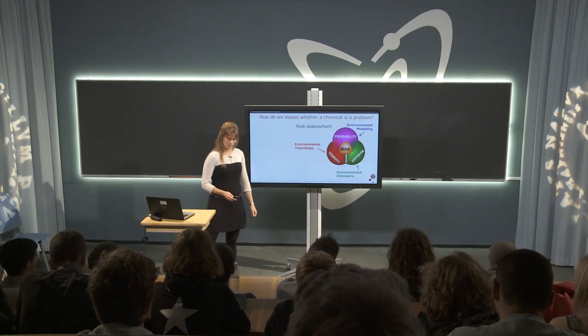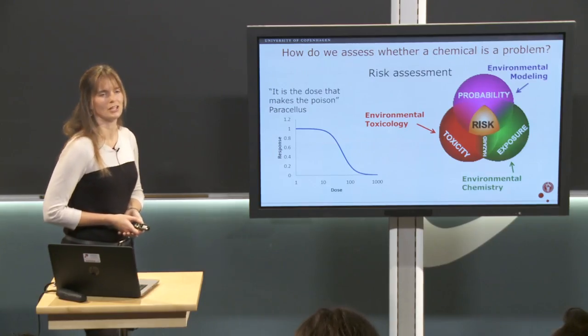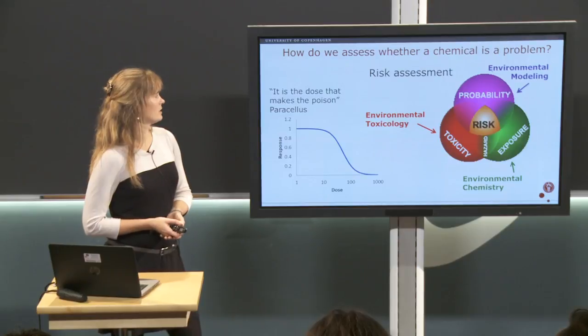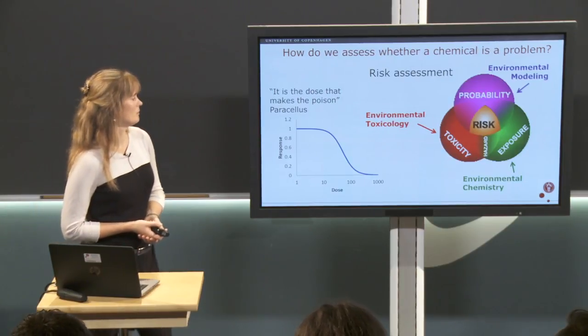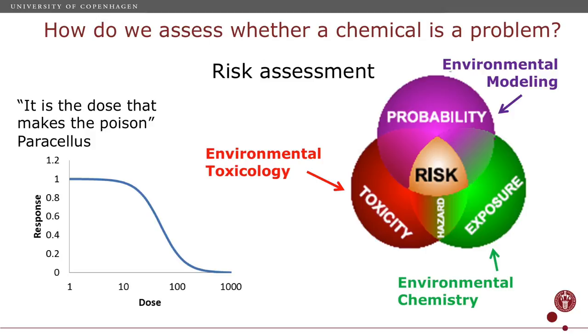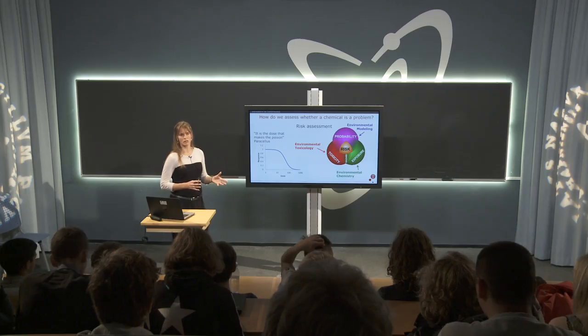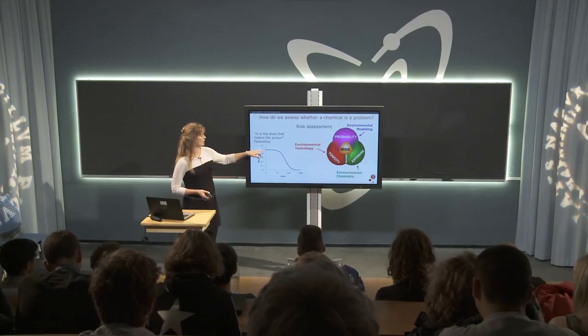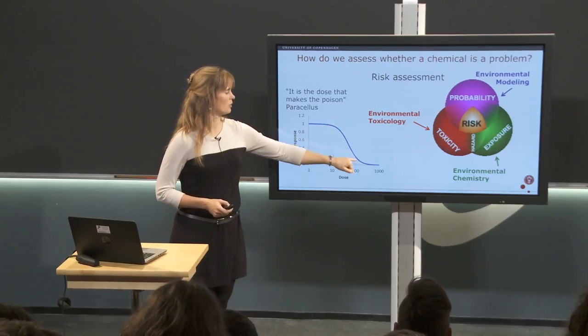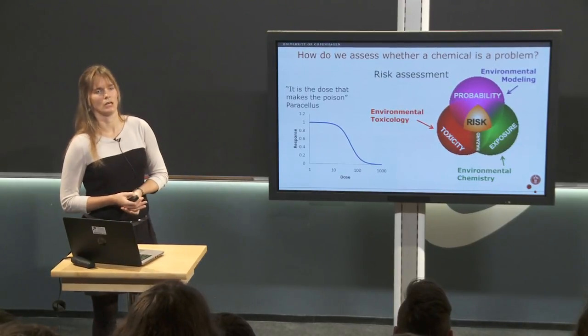The toxicity of a chemical we determine using dose-response curves. Paracelsus said that all is a poison and nothing is a poison — it's the dose alone that makes the poison. We take some organism, cell, or living thing and expose it to increasing doses of a toxicant, then look at a response such as survival, growth, or expression of enzymes or hormones. At low doses there's hardly any effect, but at a certain threshold we start to get a negative effect.